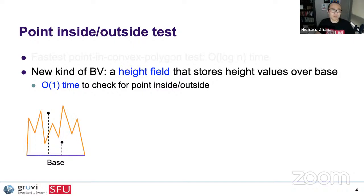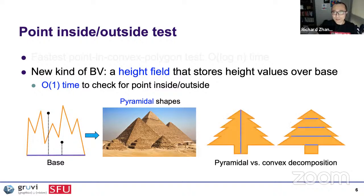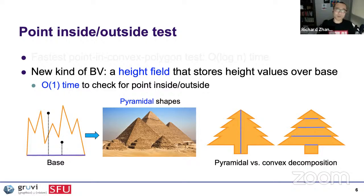The first part of my talk is about these kinds of shapes — I call them pyramidal shapes, because they look like pyramids, and it's a much better sounding word than height field. If you take a tree shape and decompose it into convex parts, you get five parts. But if you decompose it into pyramidal shapes — height fields — there are only two parts. Pyramidal shapes are more complex than compact shapes in general, and correspondingly, decomposition may yield fewer parts. Pyramidal shapes have a connection to 3D printing.